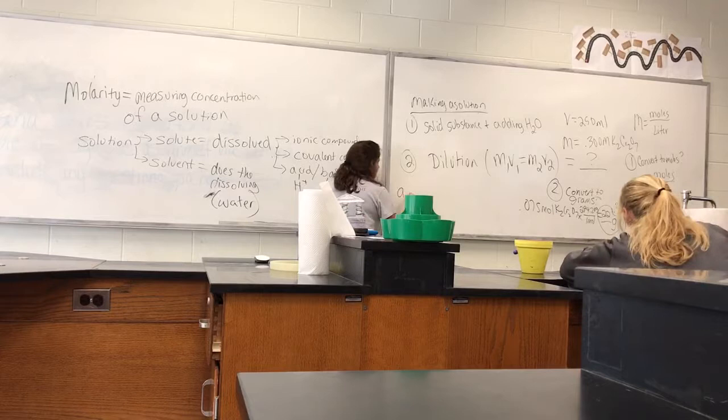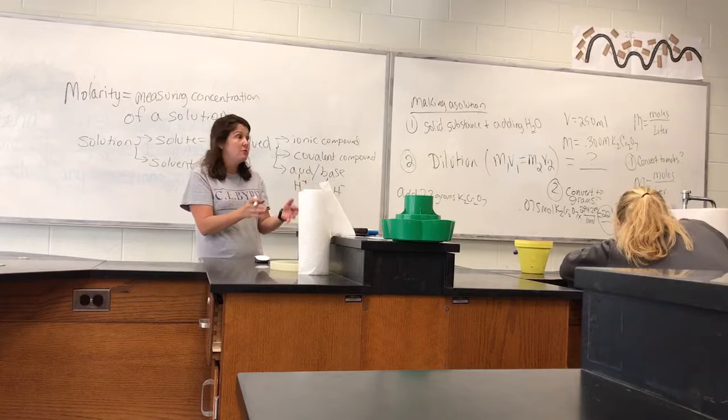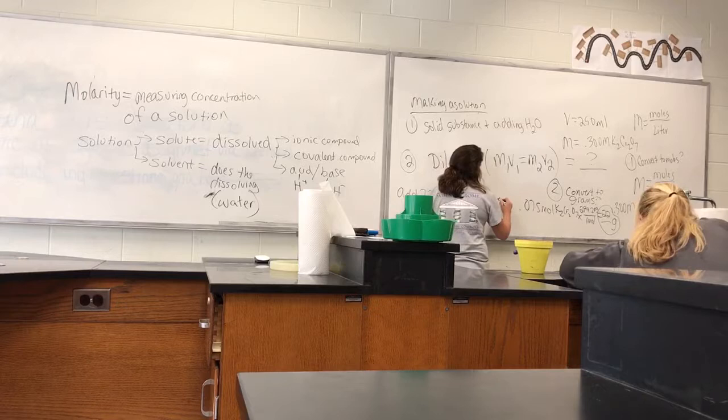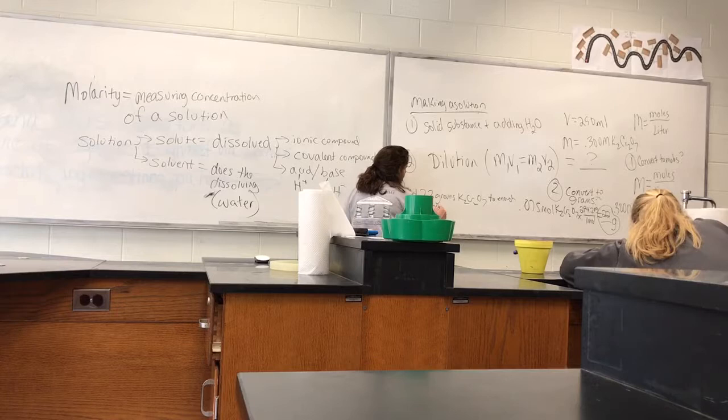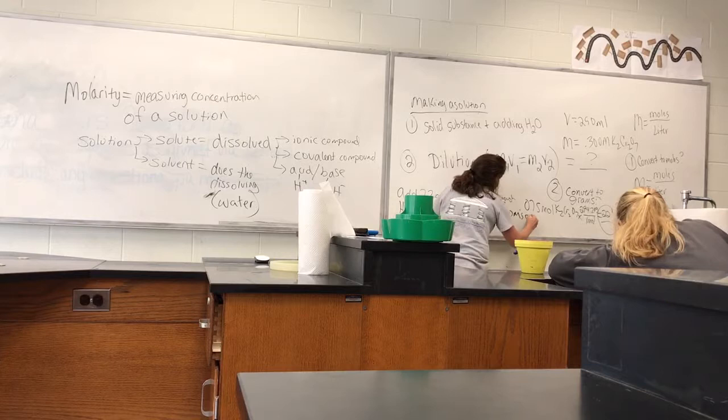Add 22 grams of potassium dichromate to enough water to reach 250 milliliters. That's it. That's all you're doing — taking that mass, 22 grams of potassium dichromate, and adding enough water to make 250 milliliters of your 0.3 molar solution.